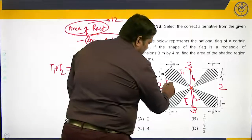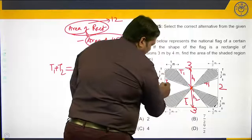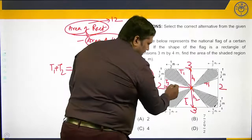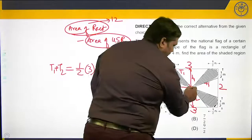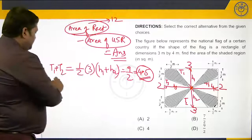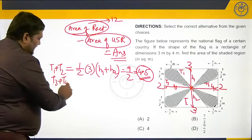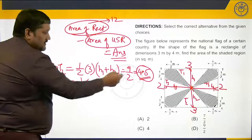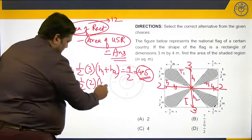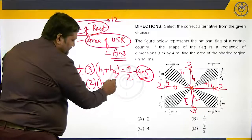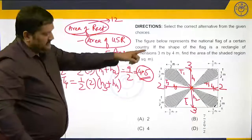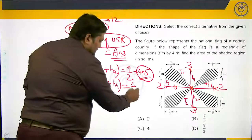Now let us call the remaining two triangles triangle 3 and triangle 4. If I keep the base as 2 on both sides and drop perpendiculars, the heights are h3 and h4 respectively. The area of triangle 3 plus triangle 4 is half times 2 times h3 plus half times 2 times h4, which simplifies to h3 plus h4. Since h3 plus h4 equals 4, the combined area is 4.